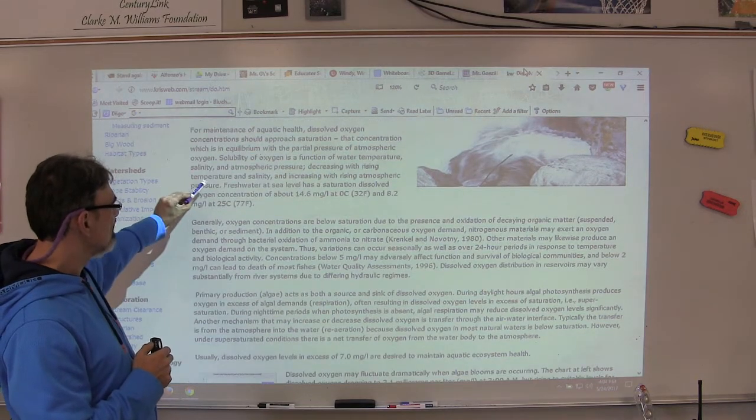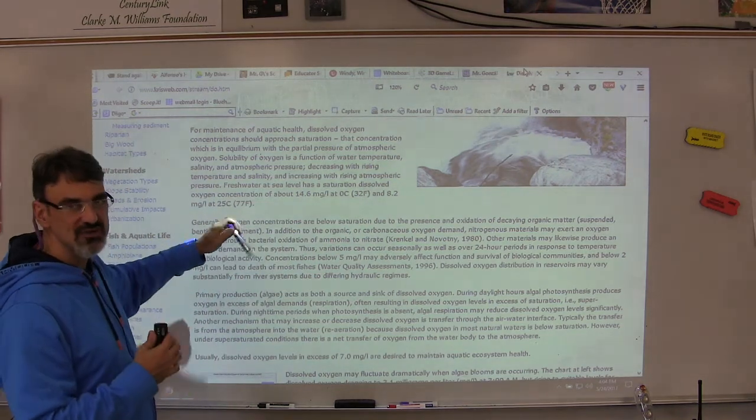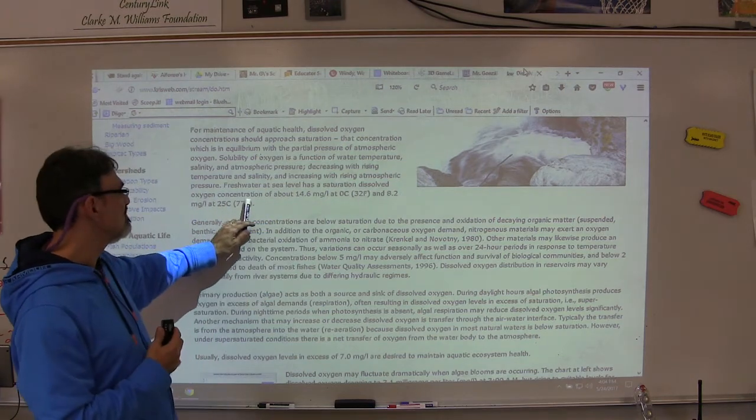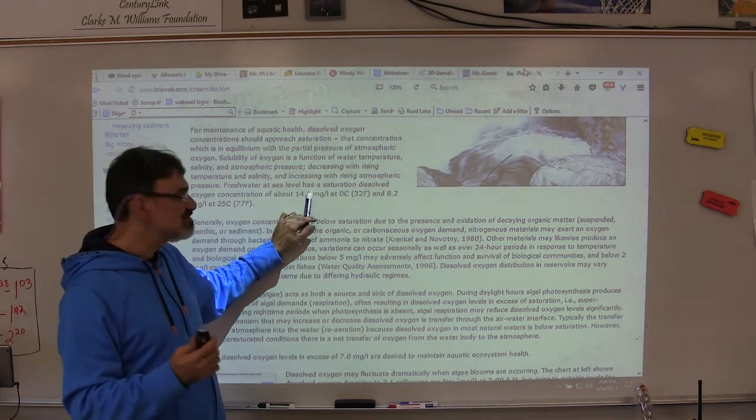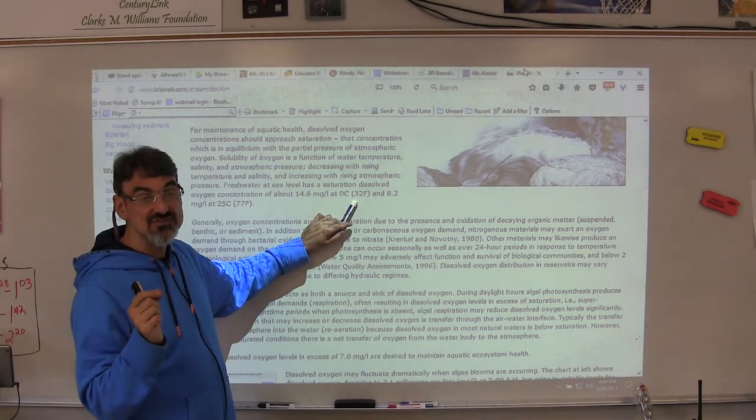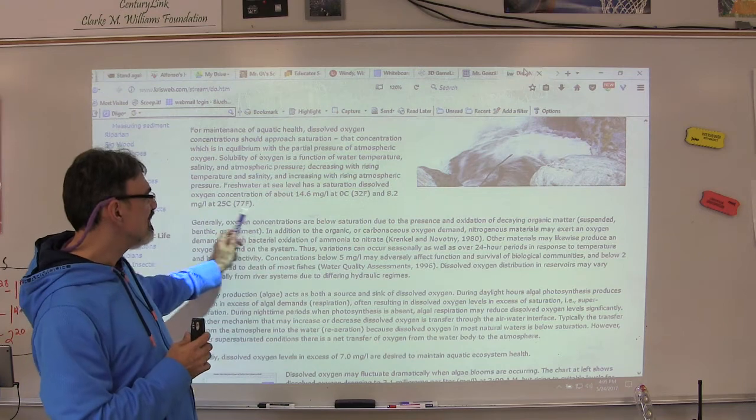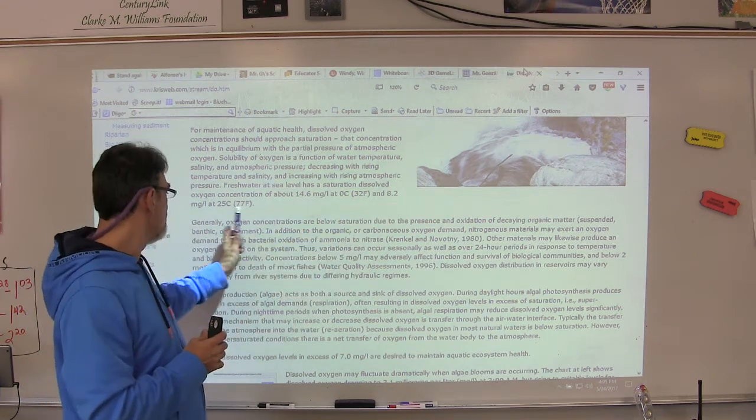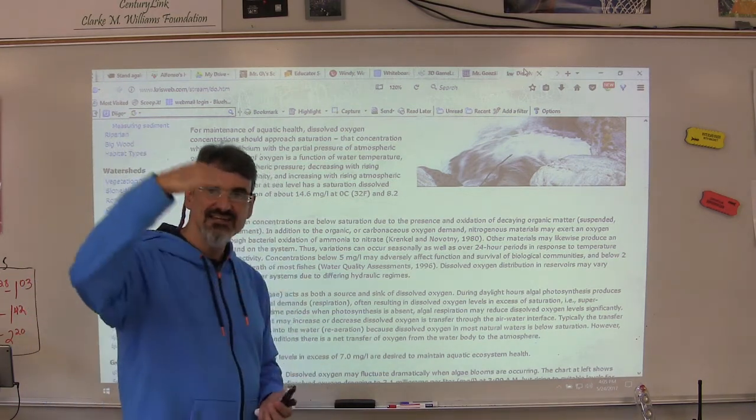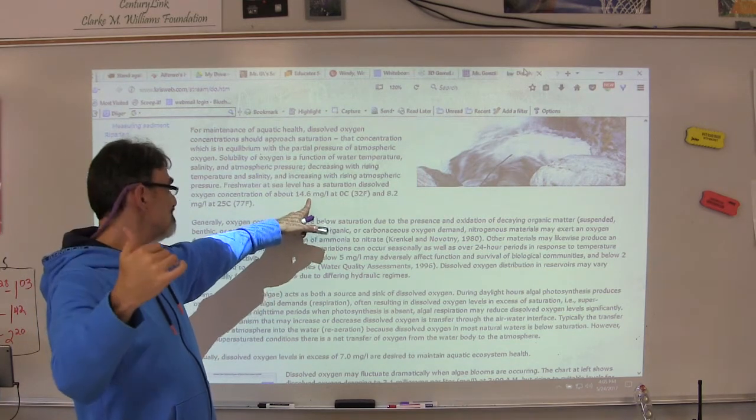But there's an important part. This tells you a little bit more about the temperatures that water needs to hold more DO. Fresh water at sea level has a saturation dissolved oxygen of about 14.6 milligrams per liter, which is a lot of DO, but that's at zero degrees Celsius, 32 degrees Fahrenheit, that's when water freezes. And 8.2 milligrams, see how it drops, at 25 degrees Celsius, 77 degrees Fahrenheit. So from freezing to 77 degrees the amount of oxygen saturation drops from 14.6 to 8.2.